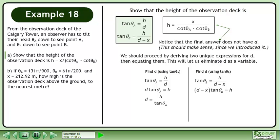Cross multiply. Distribute tan theta B through the brackets. Bring x tan theta B to the right side of the equation. Divide both sides by tan theta B to get d equals h plus x tan theta B over tan theta B.